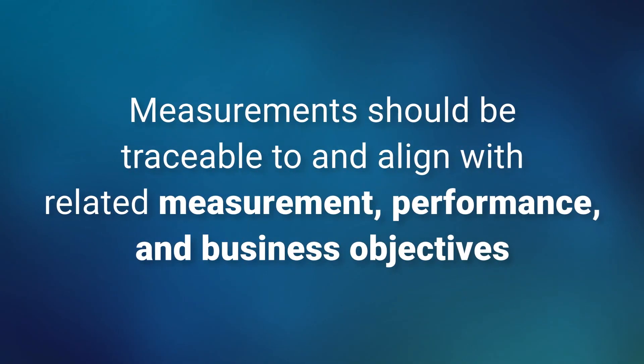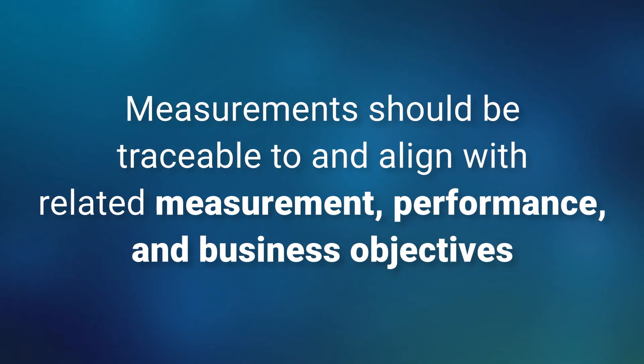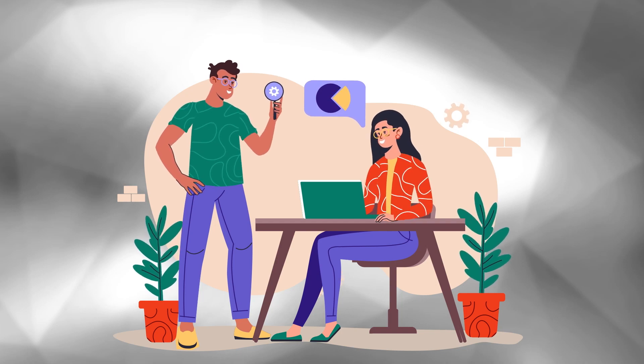Measurements should be traceable to and aligned with related measurement and performance and business objectives. Another inconsistency that can be uncovered by the performance report is a mismatch between the business objectives and the improvement priorities. The performance report specifically asks what improvement actions were undertaken. These actions should be verified to show that they contribute to the measured and targeted performance. If the improvement actions appear unrelated to the measured objectives, then something has likely gone wrong.